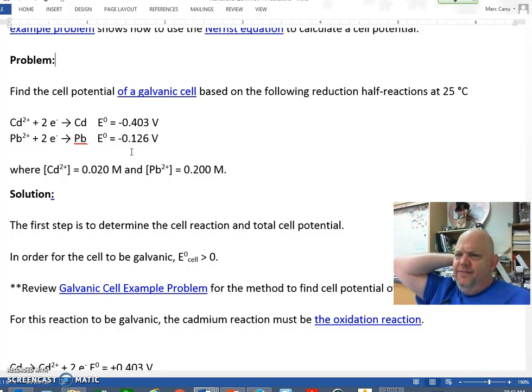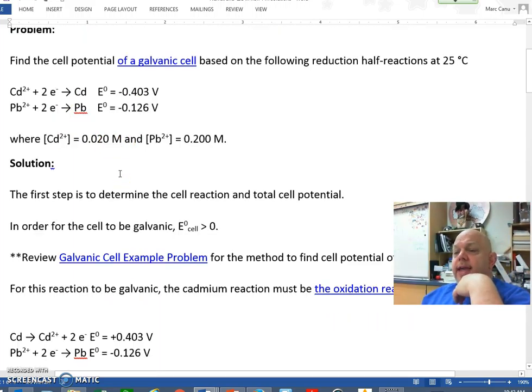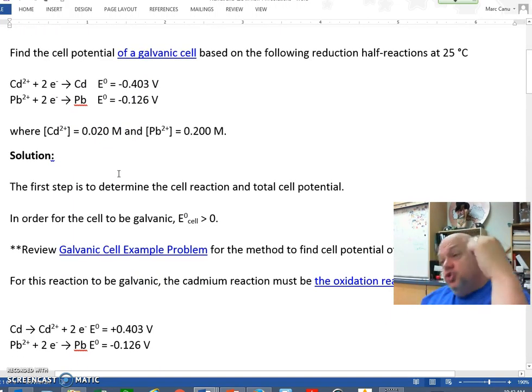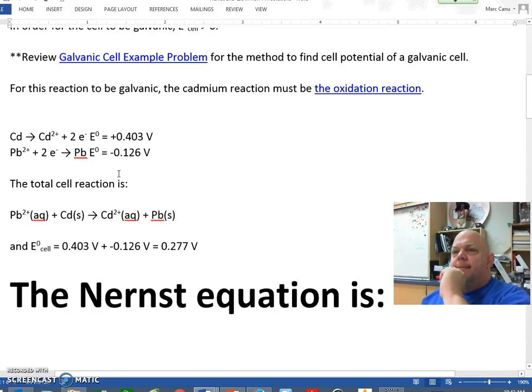We've got cadmium plus two electrons gets a solid cadmium. Lead plus two, plus two electrons gets a solid lead, and they give us the potential. Then they give us the concentrations of the cadmium 0.02 molar and the concentration of the lead which is 0.2 molar.